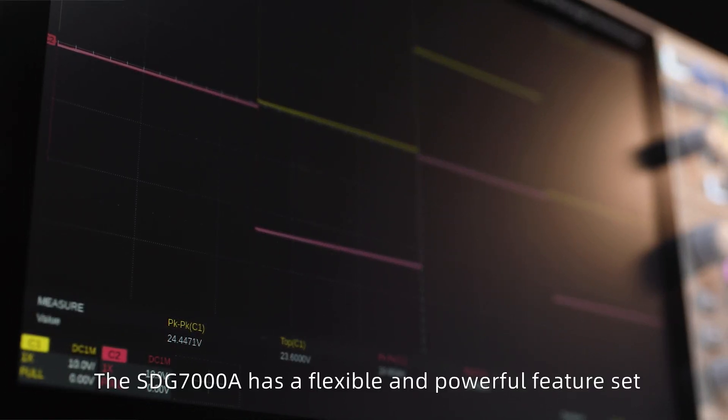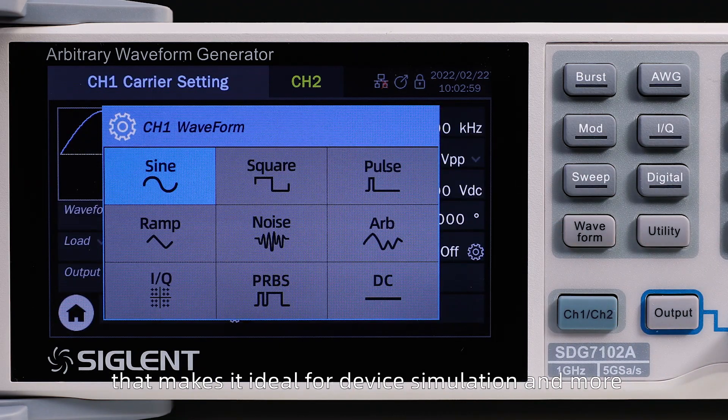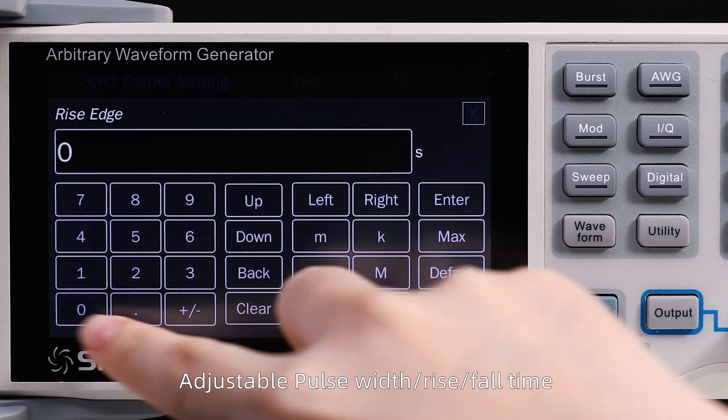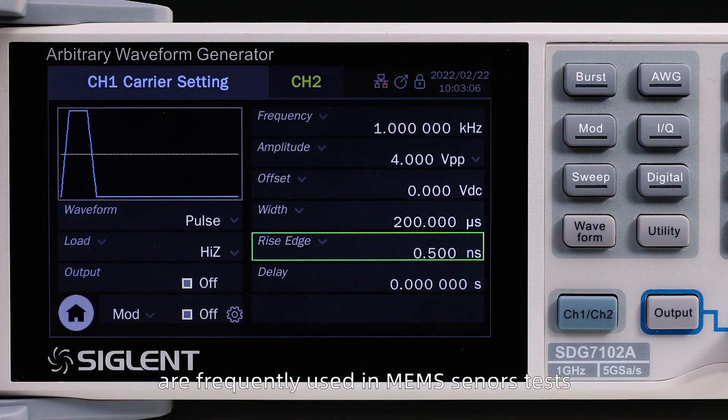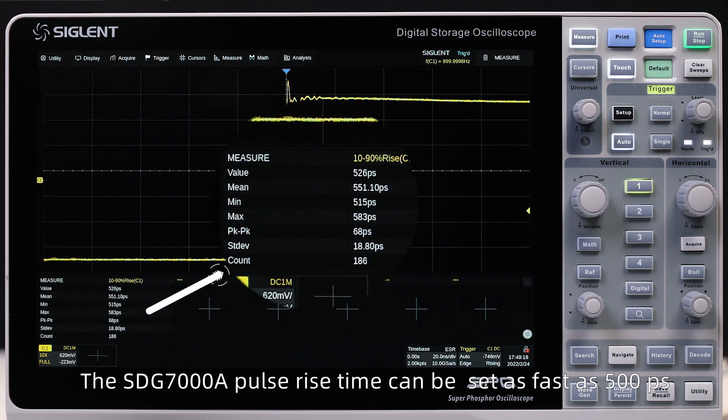The SDG-7000A has a flexible and powerful feature set that make it ideal for device simulation and more. An adjustable pulse width, rise, and fall time are frequently used in MEMS sensor tests and physics research. The SDG-7000A pulse rise time can be set as fast as 500 picoseconds.